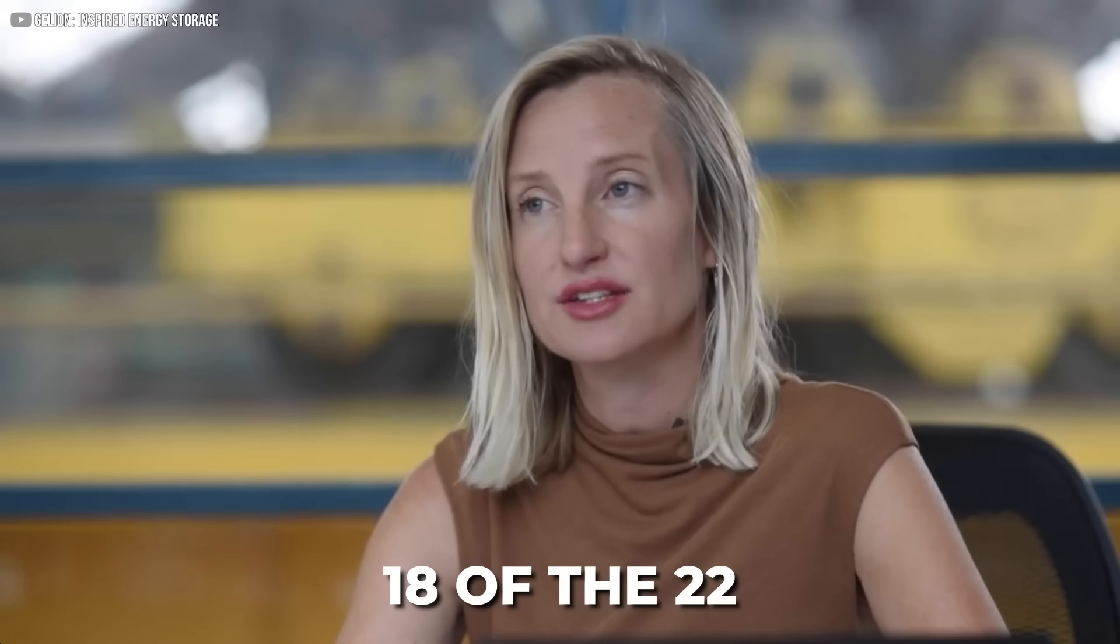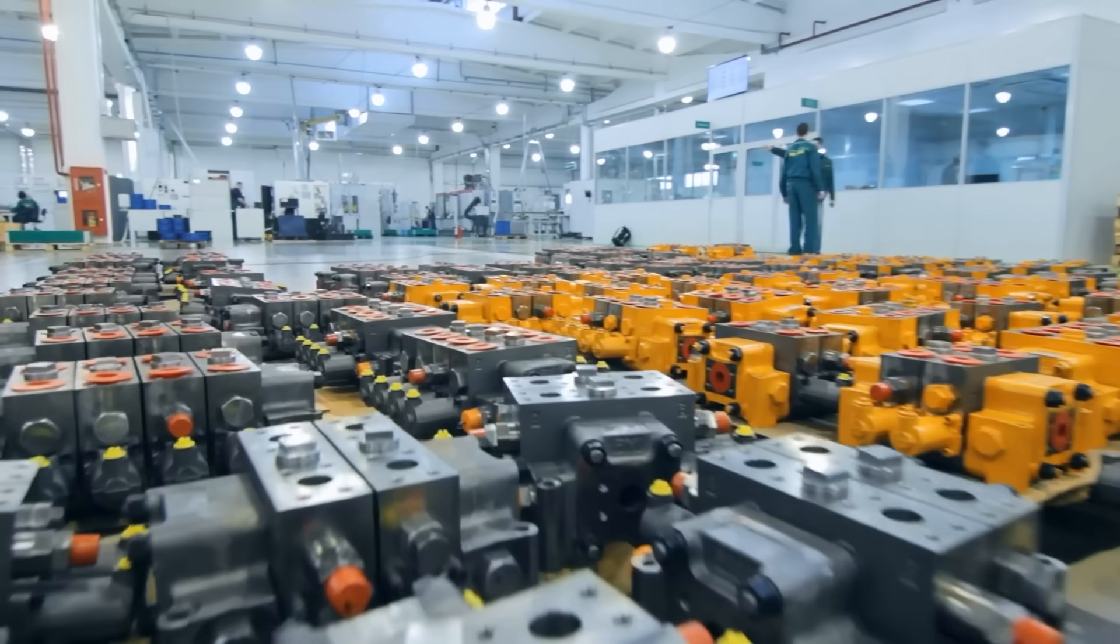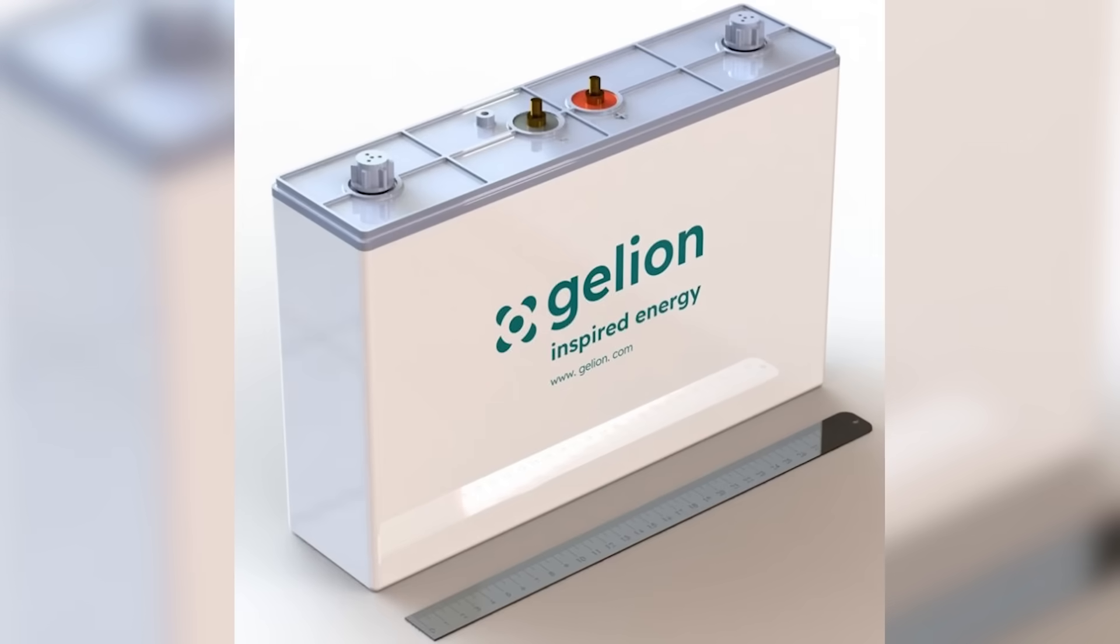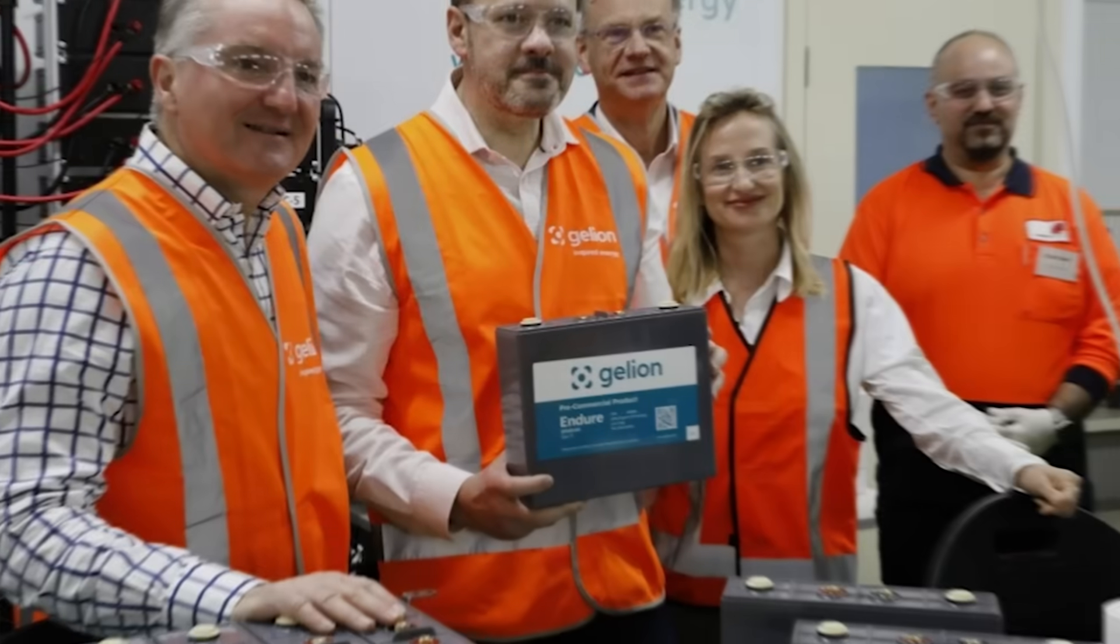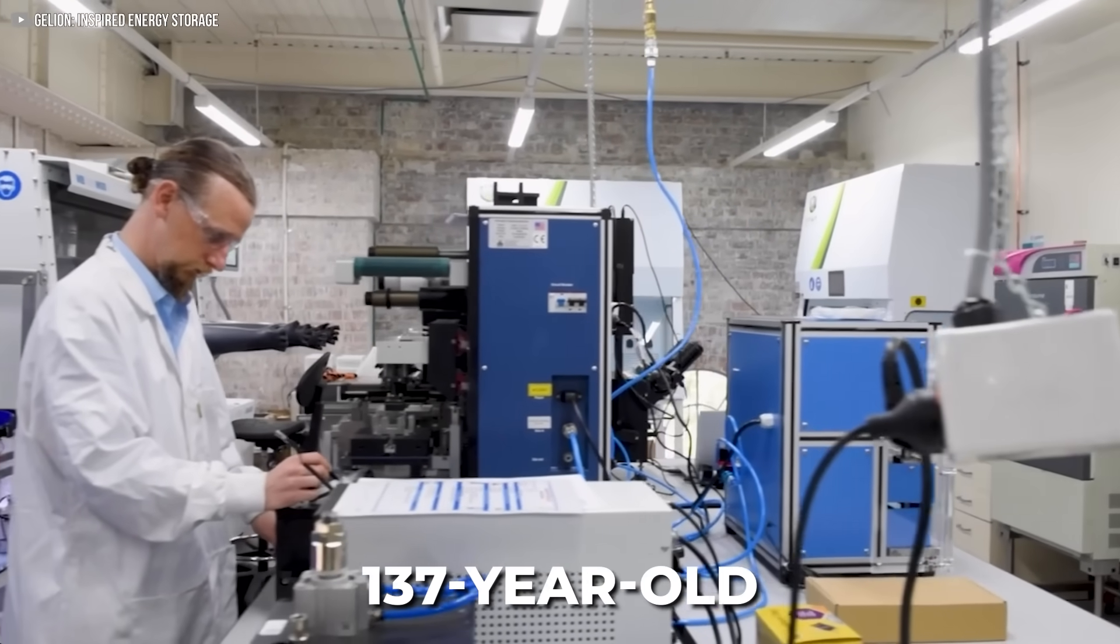Gelion says 18 of the 22 manufacturing steps can be done in existing lead-acid factories. No fancy gigafactory. No billion-dollar investment. Just a smarter use of what's already here. It's compact. It's rugged. And it's already being built. A 137-year-old chemistry brought back to life without the plumbing.